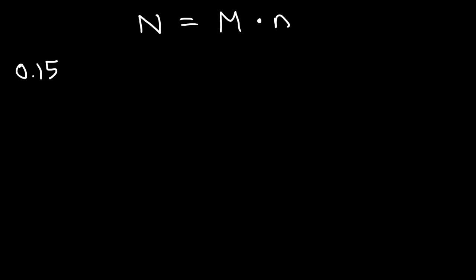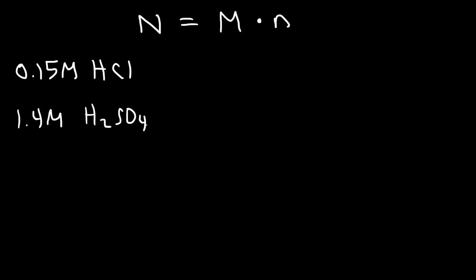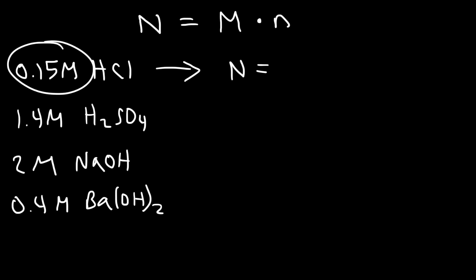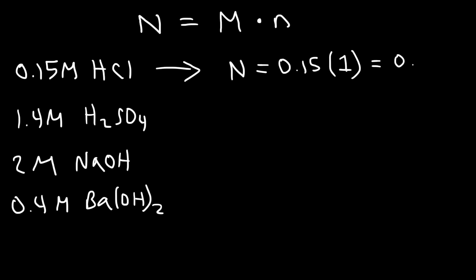I'm going to give you four practice problems. The first is 0.15 molar HCl — this is a monoprotic acid with only one hydrogen per formula unit, so n is 1, giving a normality of 0.15 N. The second is 1.4 M sulfuric acid — this time we have two hydrogen atoms per formula unit, so n is 2, and 1.4 times 2 is 2.8 N.